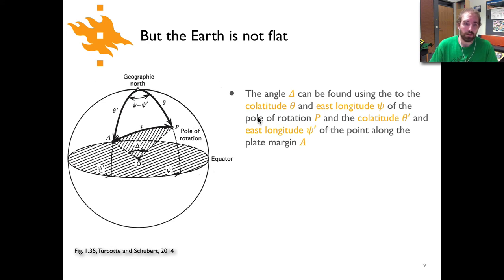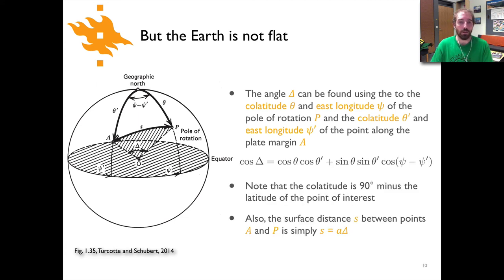If we know those two things, if we have our pole of rotation P here with its co-latitude theta and psi, and we know our position A of some point along the plate margin with its co-latitude theta prime and psi prime as its east longitude, we can now calculate the angle d or delta. You can do that using this equation here. You have the cosine of delta and then everything on the right side is a function of the co-latitude of the two points and the east longitude of the two points.